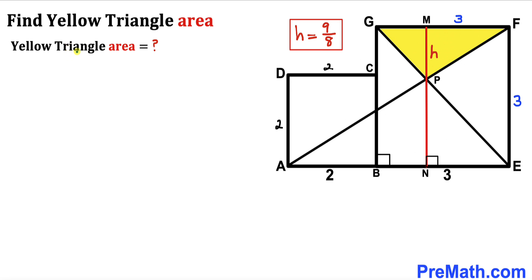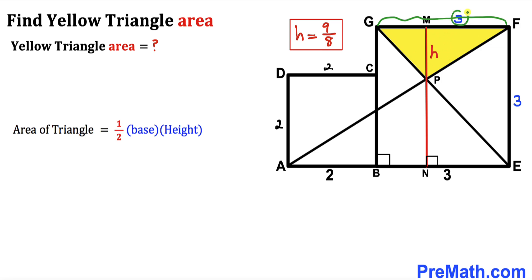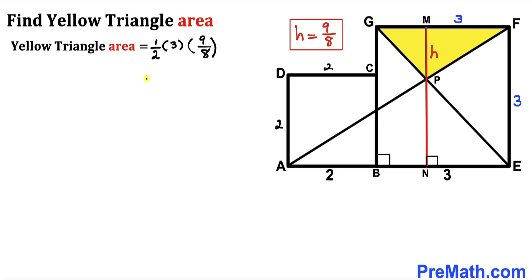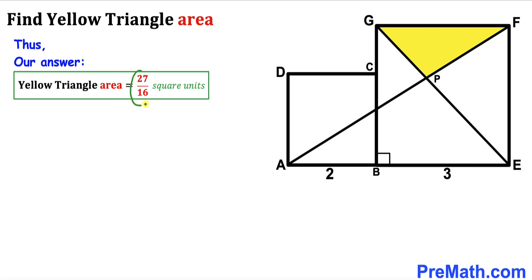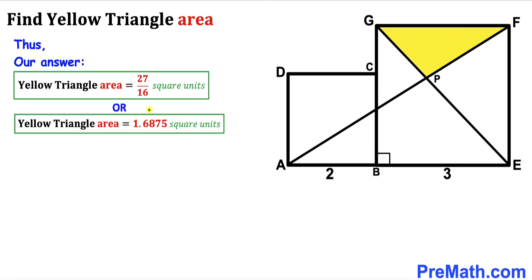Here's our final step: calculate the area of the yellow shaded triangle FGP. Using area equals one half times base times height, the base is 3 units and the height is 9 over 8. So we get one half times 3 times 9 over 8, which simplifies to 27 over 16 square units, or equivalently 1.6875 square units.